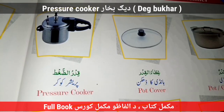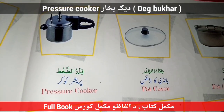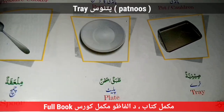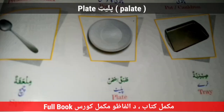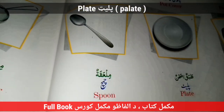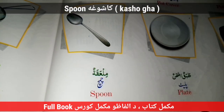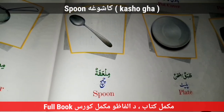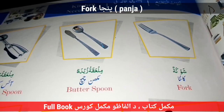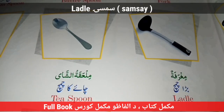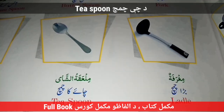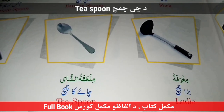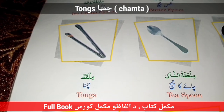Pressure Cooker — Daeg Bukhar. Tray — Patnoos. Plate — Palate. Spoon — Kashuga — Ya Chamach. Fork — Kapgir. Ladle — Samsay. Teaspoon — Decheo Chamach. Tongs — Chamta.